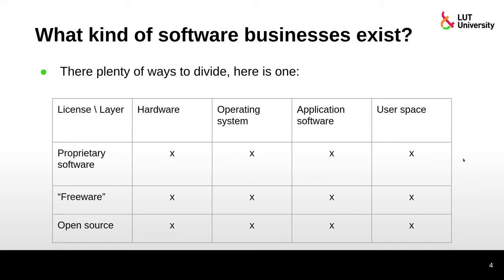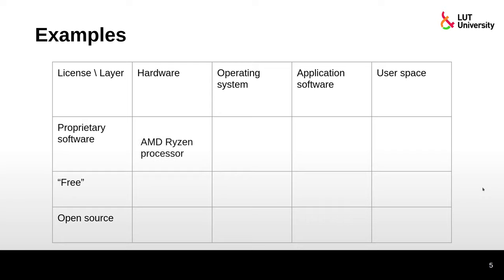In the layer axis, at the bottom we have the hardware layer, then the operating system, then application software, and then user space. Testing is different depending on where the software lies. For example, a proprietary software embedded in hardware — like the AMD Ryzen processor — has a lot of code inside that is not released as open source, making it very hard to test externally.